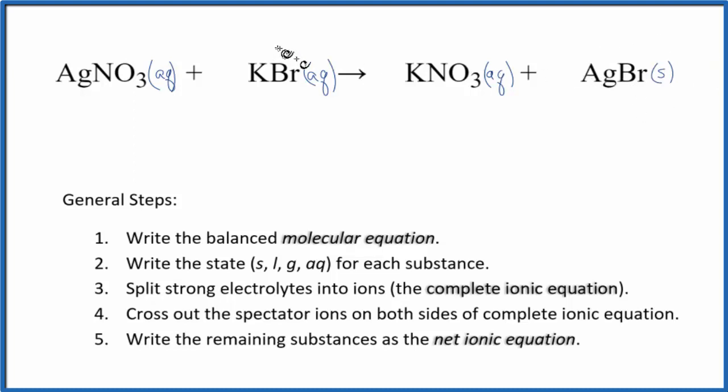So when we have this reaction, we'll have a solid fall to the bottom as a precipitate. Once we've got the states, we can split the strong electrolytes into ions. That'll give us the complete ionic equation.